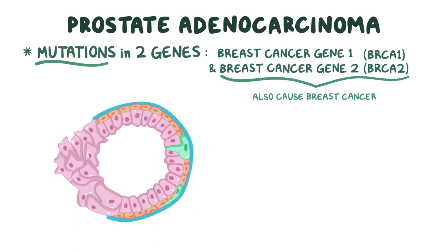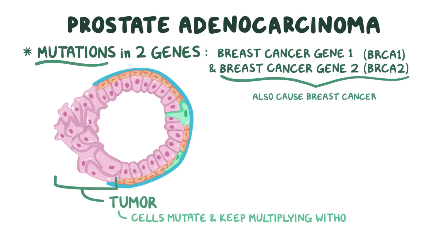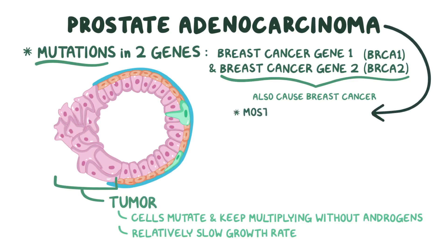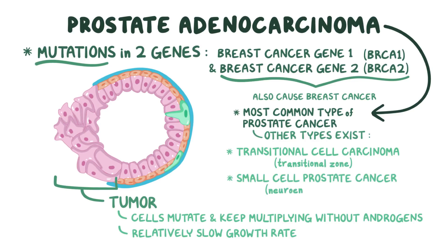Once a cancer-causing mutation happens within a cell, the affected cell starts to grow and replicate out of control, forming a tumor. Early on, prostate cancer cells depend heavily on androgens for survival, but eventually the cancer cells mutate and find a way to keep multiplying without relying on androgens. Overall, prostate cancer cells have a relatively slow rate of growth compared to other types of cancers. Even though prostate adenocarcinoma is the most common type, other rare types exist as well — for example, transitional cell carcinoma arises from cells in the transitional zone, and small-cell prostate cancer arises from neuroendocrine cells.